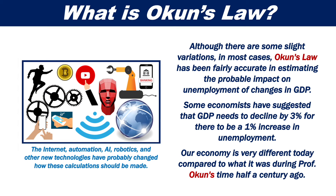Although there are some slight variations, in most cases Okun's Law has been fairly accurate in estimating the probable impact on unemployment of changes in GDP.